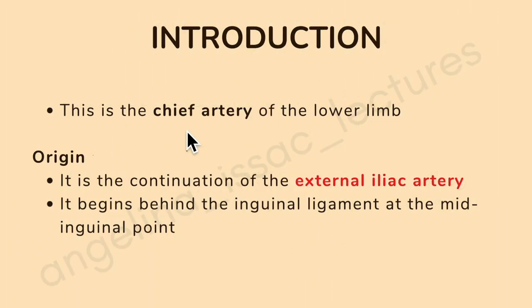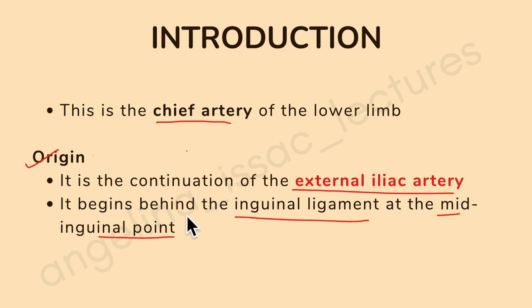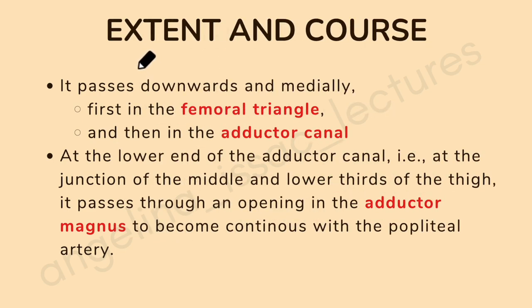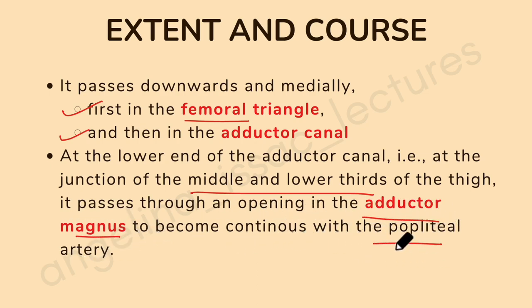To summarize: the femoral artery is the chief artery of the lower limb and is a continuation of the external iliac artery, beginning behind the inguinal ligament at the mid-inguinal point. It passes downwards and medially, first in the femoral triangle and then in the adductor canal. At the junction of the middle and lower thirds of the thigh, it passes through an opening in the adductor magnus to become continuous with the popliteal artery.